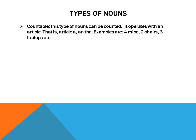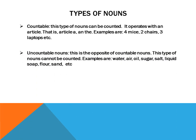Still on types of nouns, we have countable nouns. This type of noun can be counted. It is used with an article — the articles are 'a,' 'an,' and 'the.' These are examples of countable nouns.